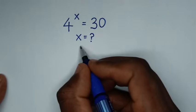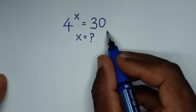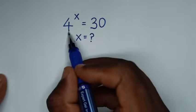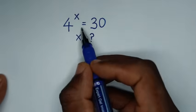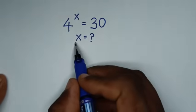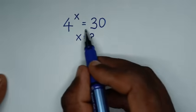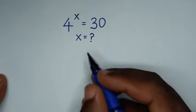Hello, you are welcome to solve this math problem, which is 4 to the power of x is equal to 30. To find the value of x from this equation.